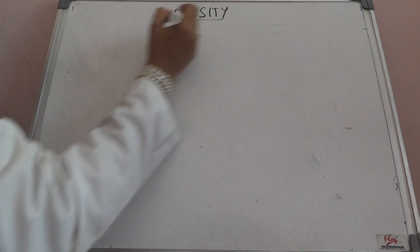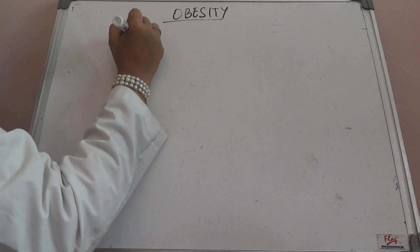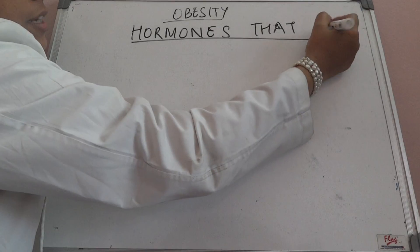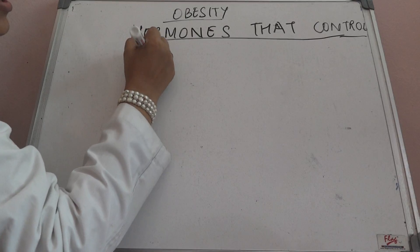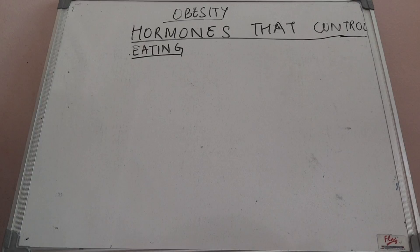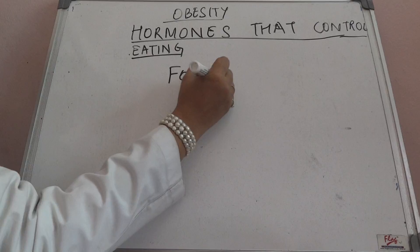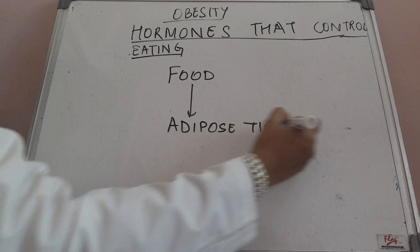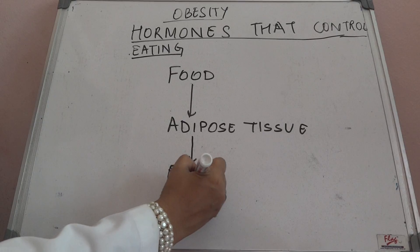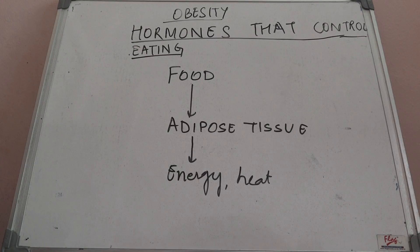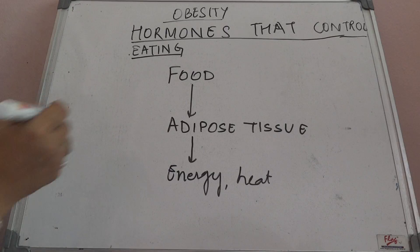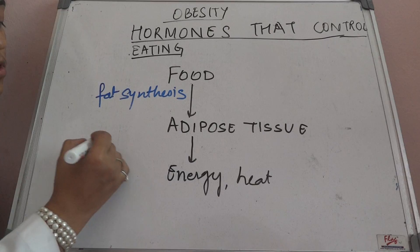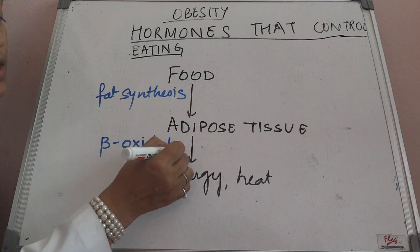Obesity is not just gain in weight — we look at it through the hormones that control eating. The concept is simple: there is food, you take in the food, and the food is accumulated as adipose tissue. If you exercise, energy is used and liberated as heat. If you do not exercise, the food undergoes fat synthesis, accumulates in adipose tissue, and beta oxidation converts it to energy or heat.